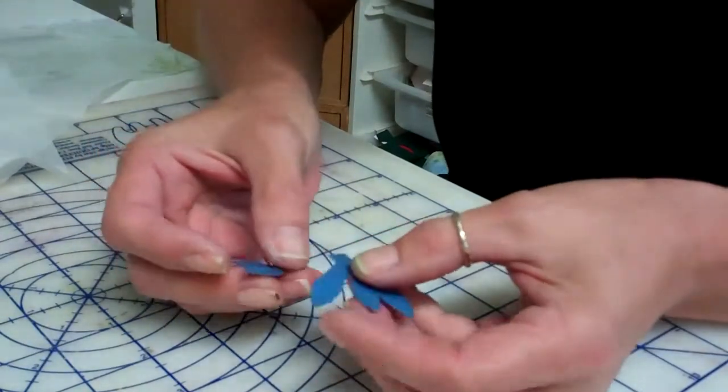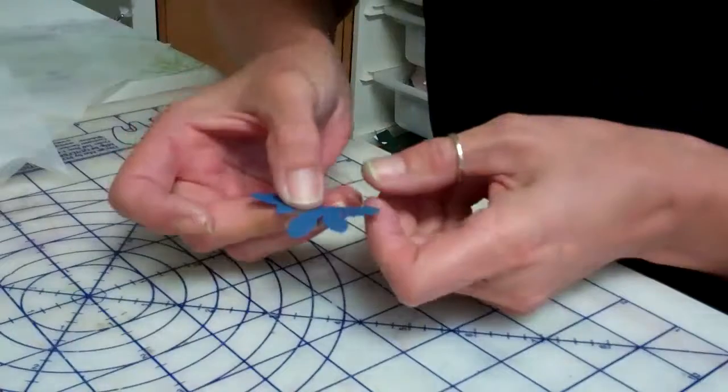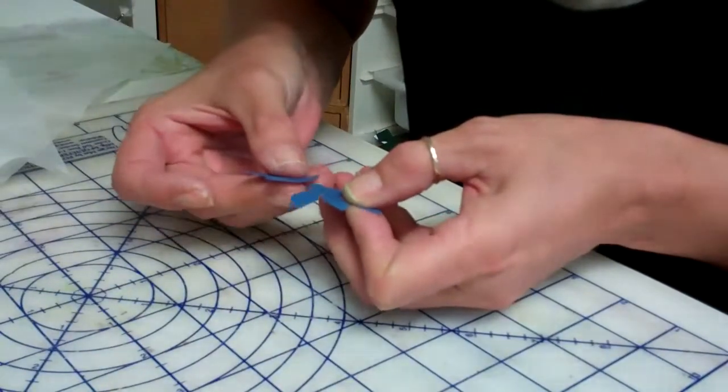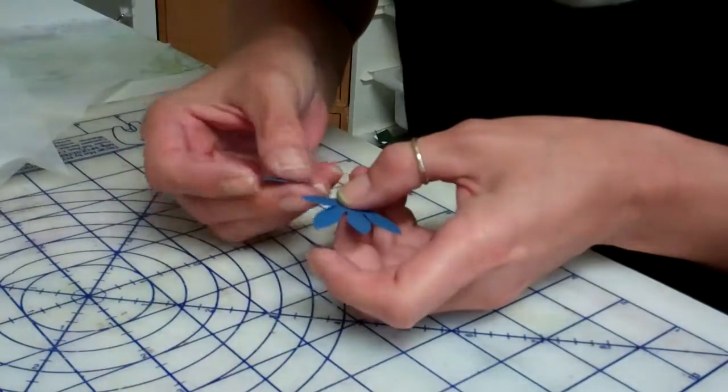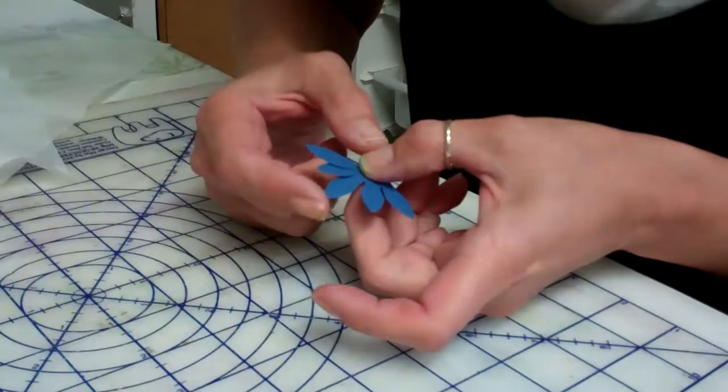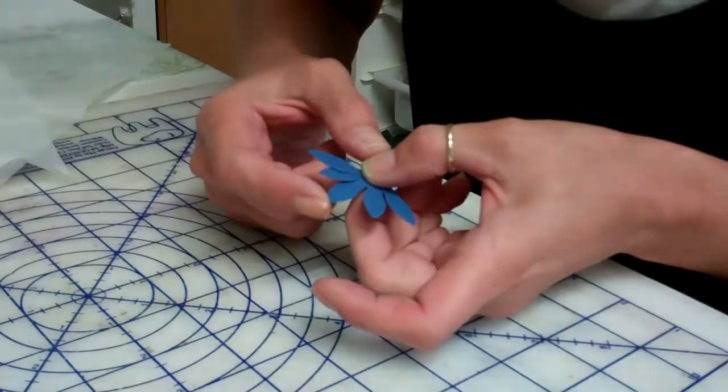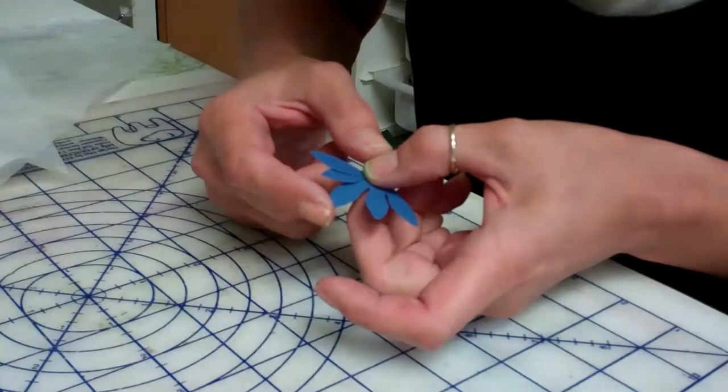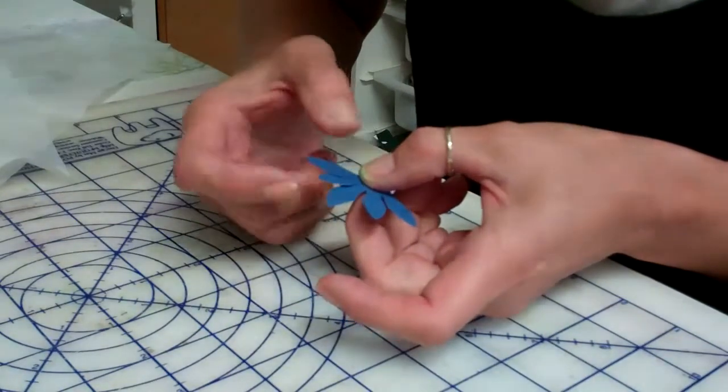The cut file was actually from Penny Duncan Creations. If you go to her blog, you'll be able to find the cut file for her tulip. And it was such a similar shape, and the petal shape was exactly what I was looking for.